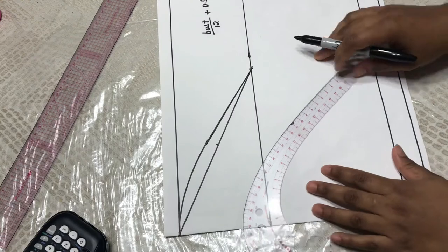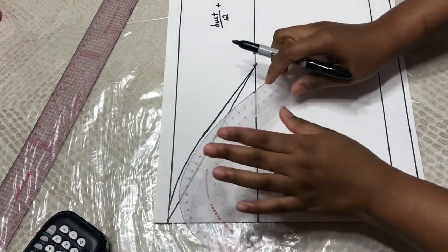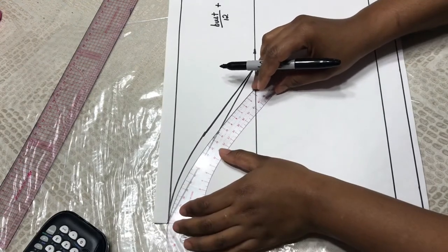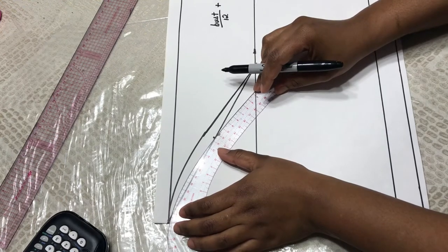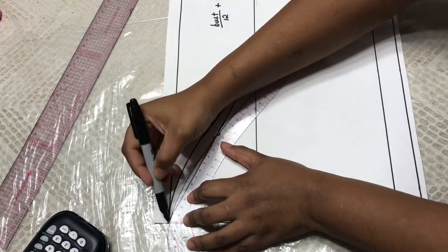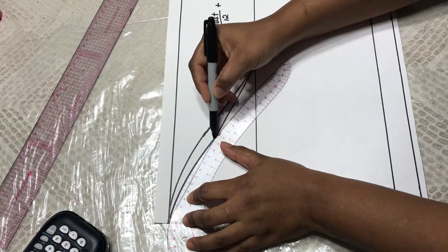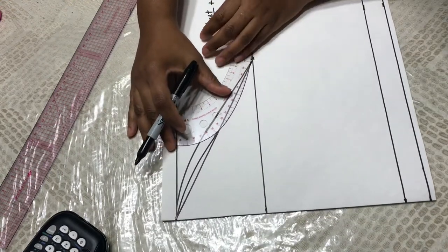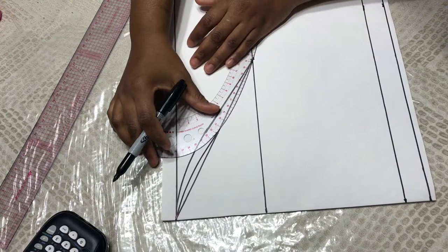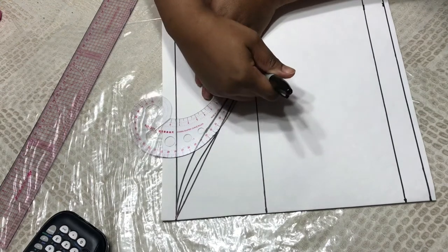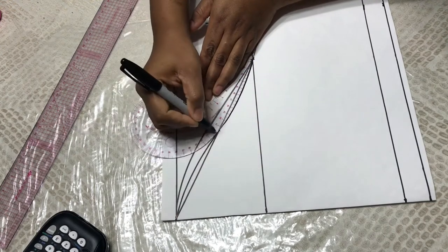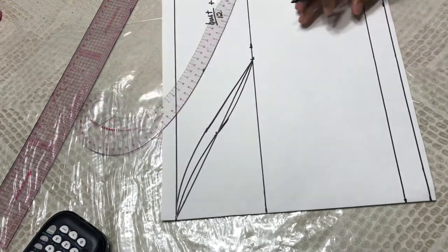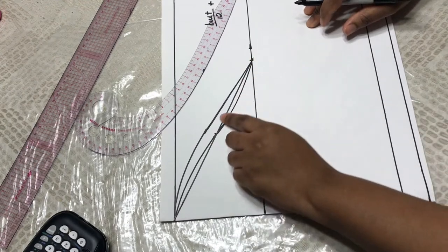To make your front armhole, you're going to take your armhole curve and you're going to make a slight curve from the tip of the paper like this to the midpoint, and then you're going to turn it the other way like this and connect it from the 9 inch mark to the midpoint. That will give you the curve for the front armhole.